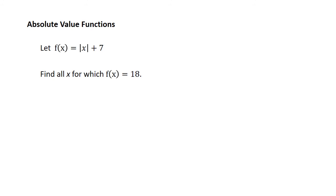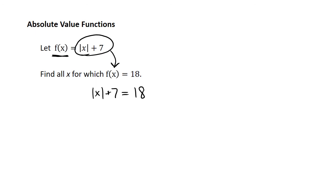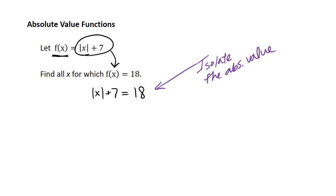Let's do one example using an absolute value inside a function. Let f of x equal the absolute value of x plus 7, where the plus 7 is outside the absolute value. To find all x for which f of x equals 18, we substitute in what f of x equals: the absolute value of x plus 7 equals 18. Remember, when solving absolute value equations, you must isolate the absolute value. Subtracting 7 from both sides gives the absolute value of x equals 11.